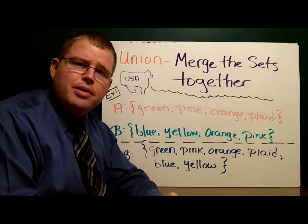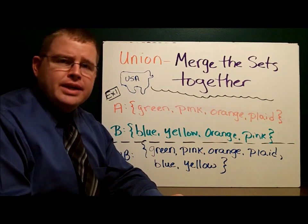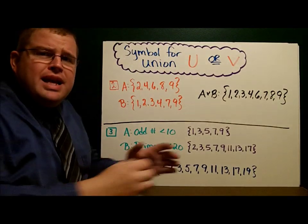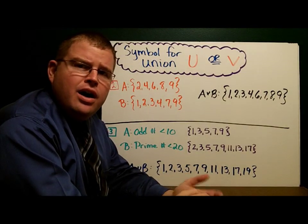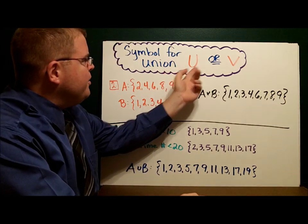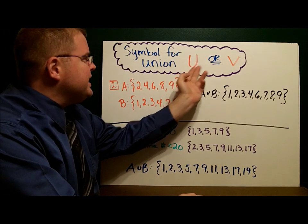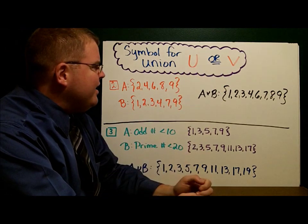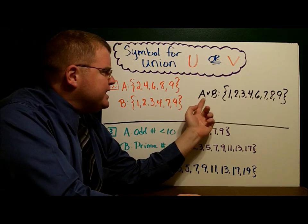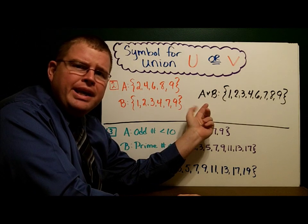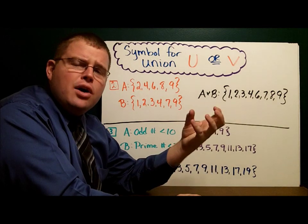Let's take a look at some notation for unions. The symbols that we use to denote a union are simply this U or a V. For example, right here you see the V in between A and B. That means A union B.